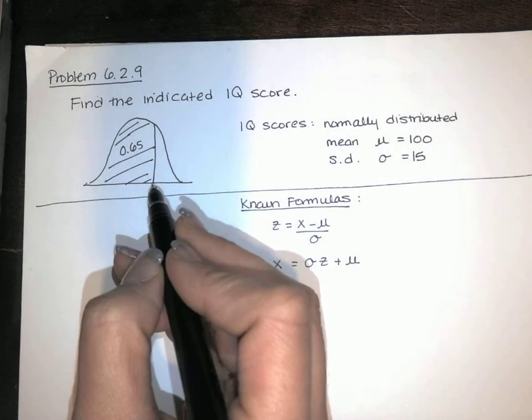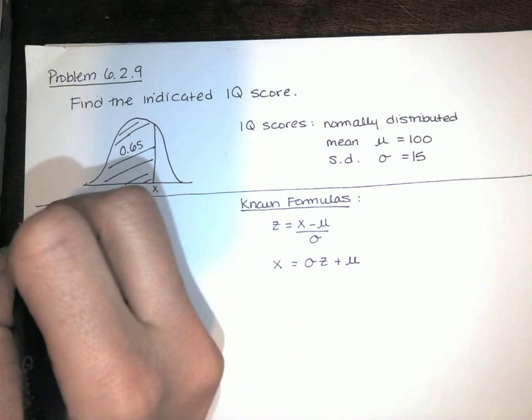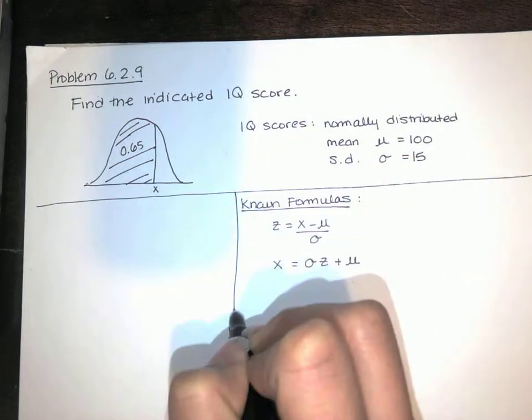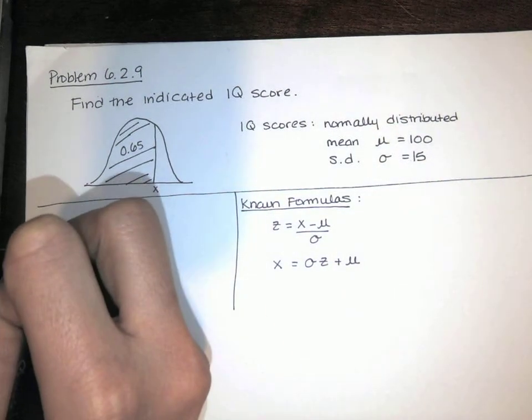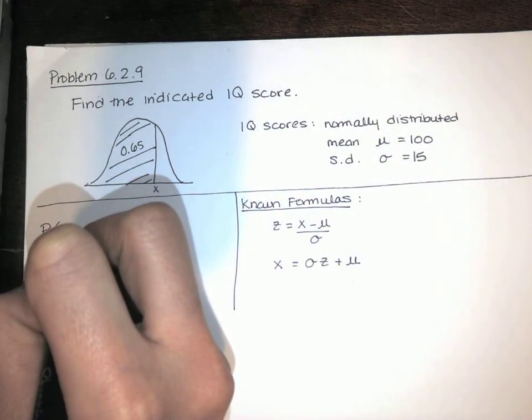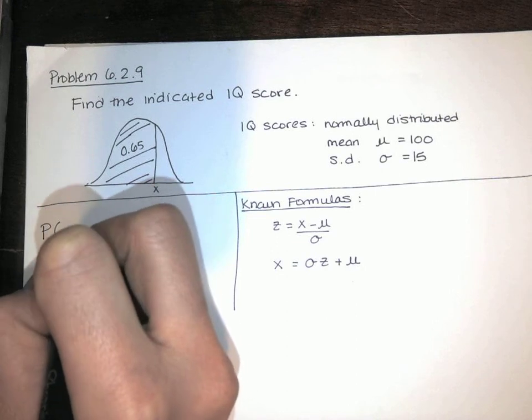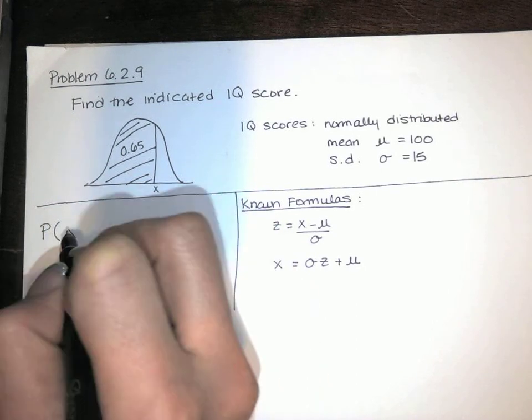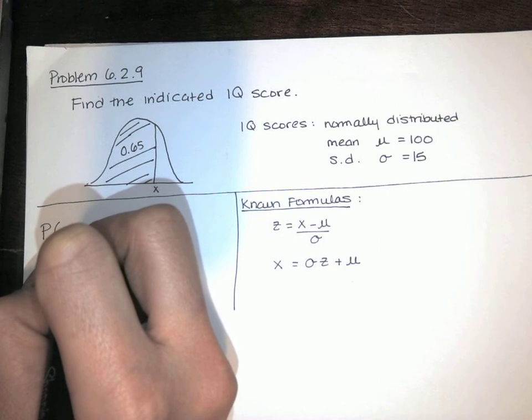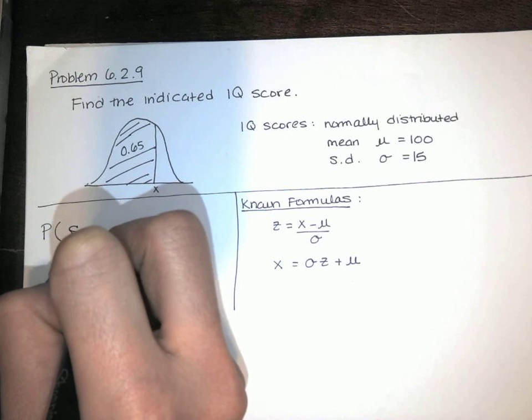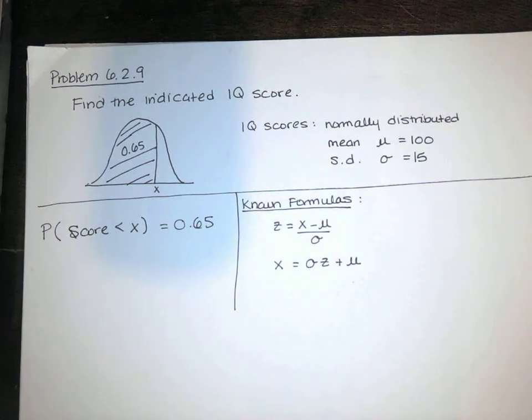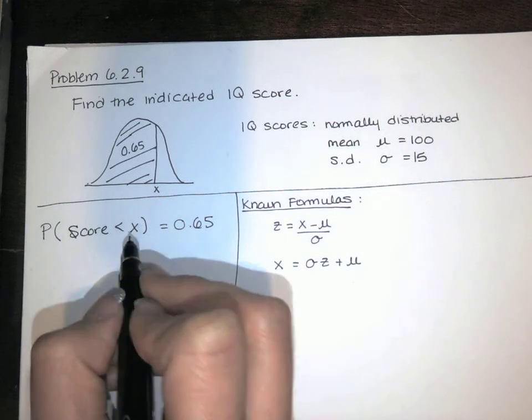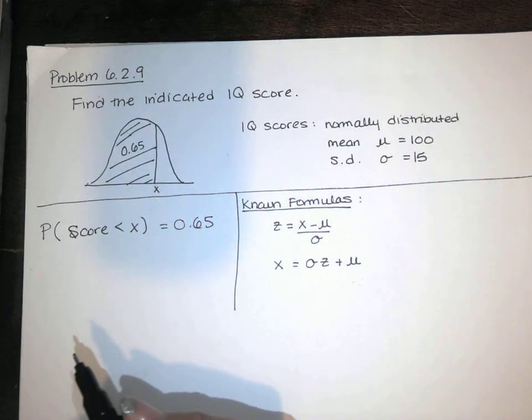So we're trying to find an x value so that the probability, I'm going to look at this picture and translate it, I want the probability that a score is less than x to be equal to 65%. And x is an IQ score.